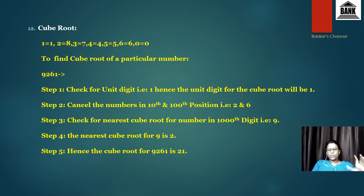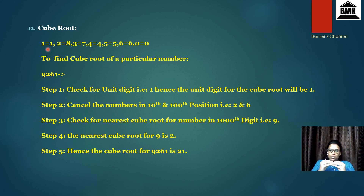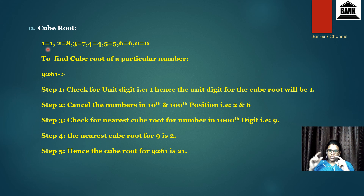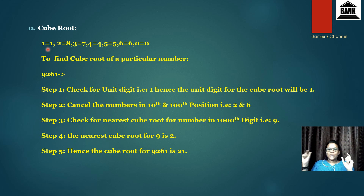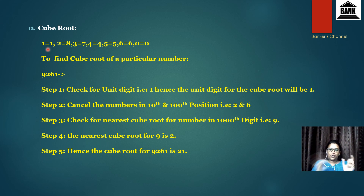Similarly, we can find cube roots. The rules are: if the unit digit of the number is 1, the resultant unit digit is 1; if 5, resultant is 5. Only two pairs are reversal: if the unit digit is 2, the resultant unit digit is 8, and vice versa; if the unit digit is 3, the resultant is 7, and vice versa. All other digits (0, 1, 4, 5, 6, 9) remain the same in the resultant.